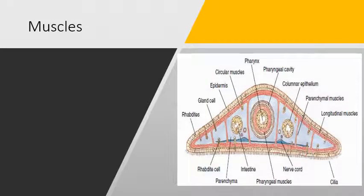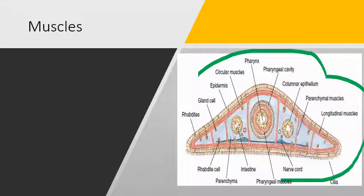Mesoderm in Turbellaria gives rise to the muscles. Keep in mind that mesoderm in all animal kingdom gives rise to the muscles. This is the cross section of a planarian body. There are three kinds of muscles found in the Turbellaria.